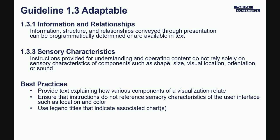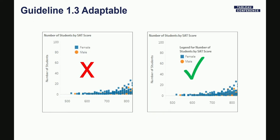A common example: when you use legends, make sure they have titles so someone can understand which chart they go with. On the left we have a common Tableau pattern where a legend is placed near a chart with no title — the user is assumed to know the relationship. But using a screen reader, these are two separate objects with no apparent relationship. A good practice is to title your legends appropriately — for example, if the chart is called 'Number of Students by SAT Score,' call the legend 'Legend for Number of Students by SAT Score.'